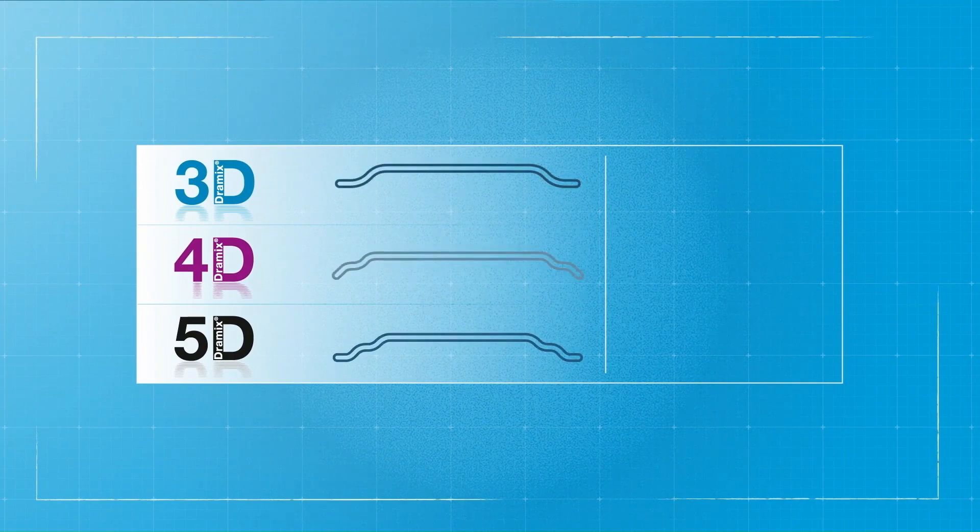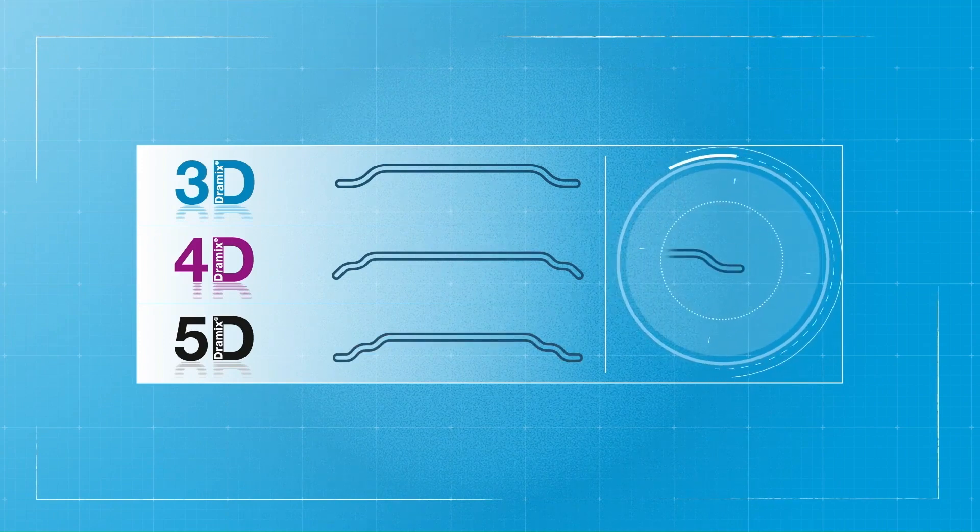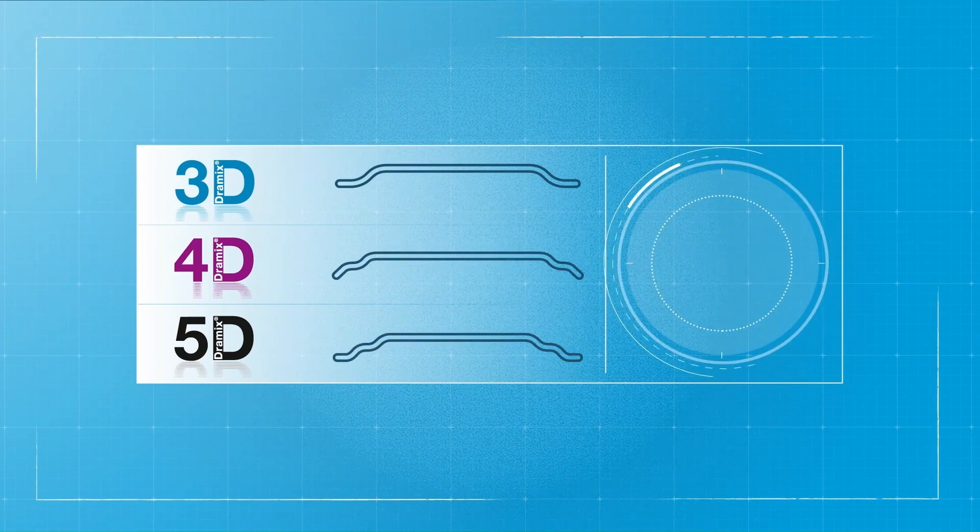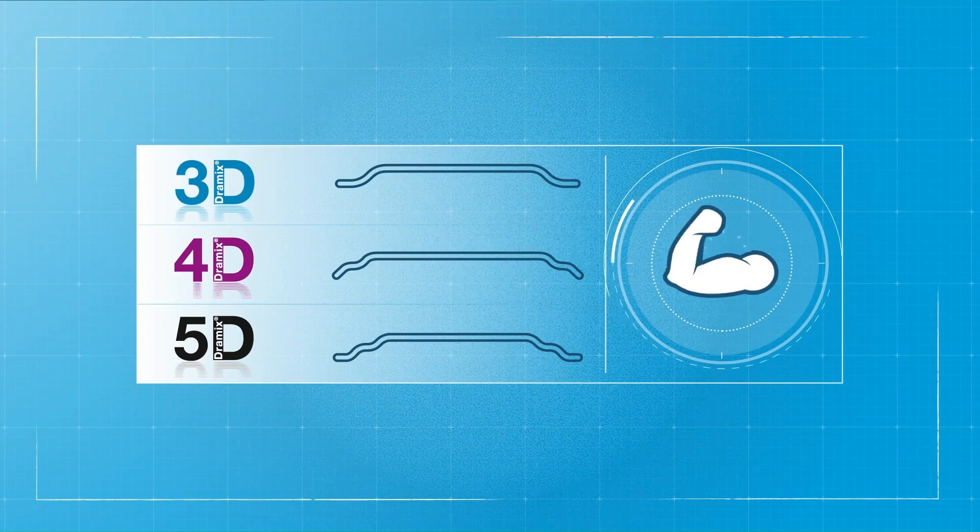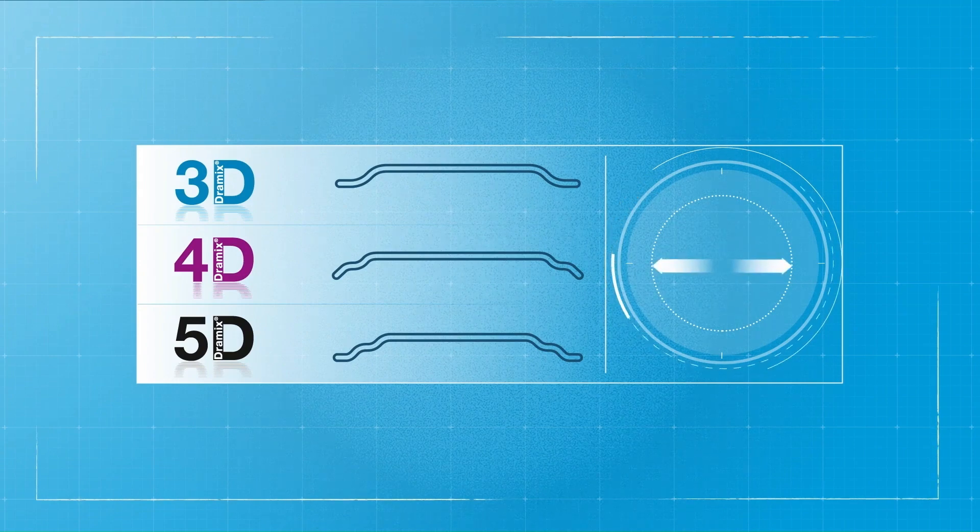Dramex 3D, 4D, and 5D. Each fiber has a different hook, strength, and ductility.